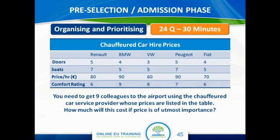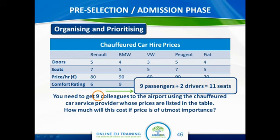In this case, you need to interpret 'price of utmost importance' as an indication to select the cheapest option. Another very important thing to realize is that you need to get nine colleagues to the airport. Looking at the number of seats, you will realize you need two cars. A trap to avoid is forgetting the drivers — nine passengers plus two drivers equals 11 seats total. That means you likely need a seven-seater and a five-seater, so the correct answer is arrived at by selecting the cheapest seven-seater and cheapest five-seater car.